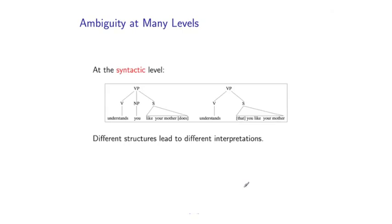It's interesting to note that many of these ambiguities manifest themselves at the syntactic level. What I mean by that is they manifest themselves in the parsing problem that I showed you earlier. So different structures at the parsing level, again, these are these hierarchical parse trees I showed you, lead to different interpretations.